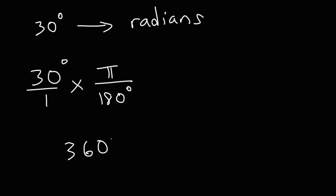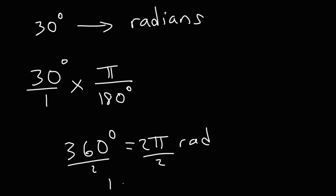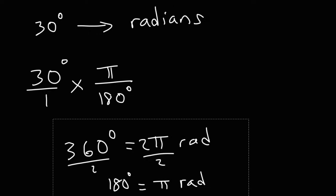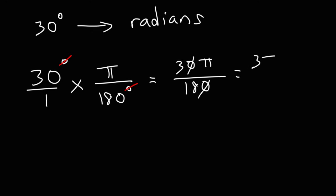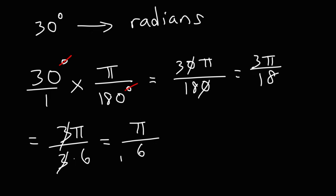Keep in mind, we said that 360 degrees is equal to 2 pi radians. If we divide both sides by 2, 360 divided by 2 is 180, and 2 pi divided by 2 is pi. So 180 degrees is equal to an angle measure of pi radians. Thus, to convert 30 degrees into radians, multiply by pi over 180 degrees so the unit degrees cancels. We get 30 pi over 180. We can cancel a zero to get 3 pi over 18, and then since 18 equals 3 times 6, we cancel the 3, giving us pi over 6 radians.